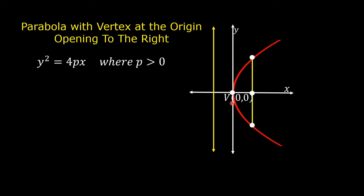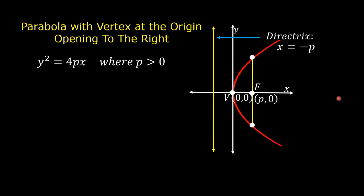This is the vertex of the parabola at the origin. The coordinates of the vertex are (0, 0). This is the focus with the coordinates (p, 0). This yellow line is the directrix. The equation of the directrix is x is equal to negative p. This yellow segment is the Latus Rectum of the parabola.